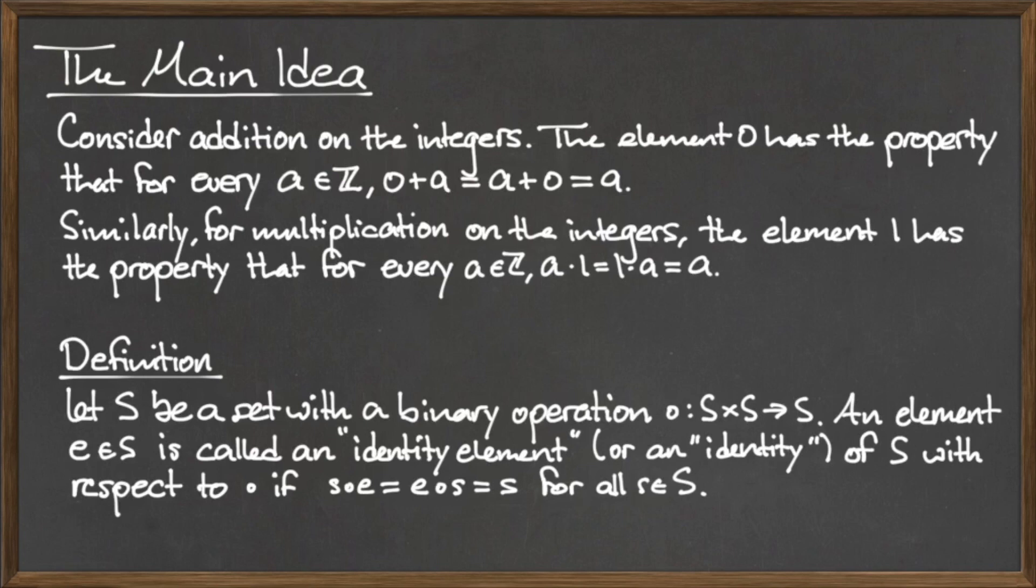We can extend this idea of an identity element to any binary operation. Let S be a set with a binary operation dot from S cross S to S. An element e in the set S is called an identity element or an identity of S with respect to dot if s dot e equals e dot s equals s for all elements little s in the set capital S.